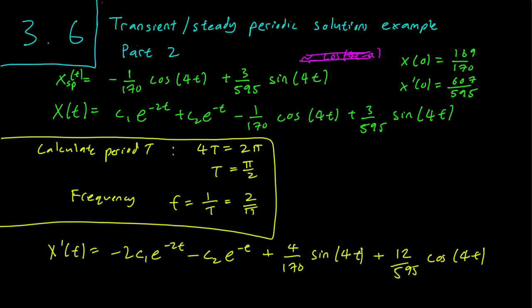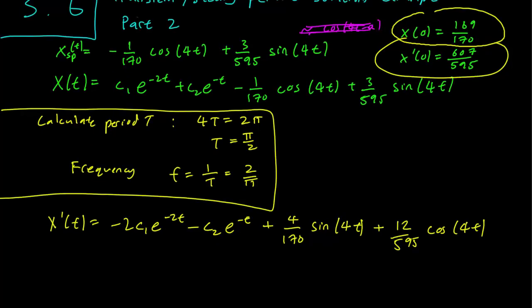What remains is to use our initial conditions. We have x equals 169/170 when t is 0. Let's use the first equation here. So x equals 169/170 when the right hand side has t equals 0, and this is just going to be c1 plus c2 minus 1/170. That's our first equation.